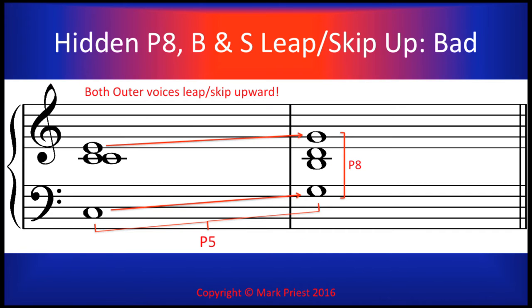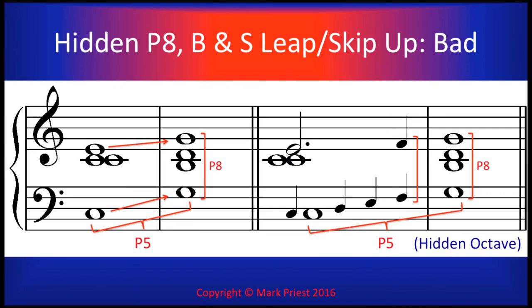But this hidden octave sounds bad. Why? Because here we have two outer voices — bass and soprano — leaping and skipping upward together into an octave. There is zero stepwise motion, so this is not good voice leading. Having both bass and soprano skipping and leaping in the same direction sounds bad and amateurish, because of the filling-in effect of the ear mentioned earlier.